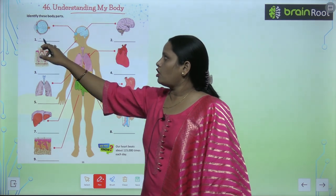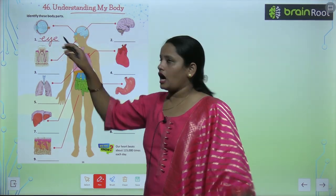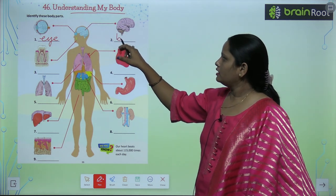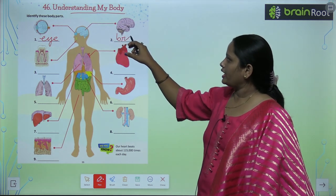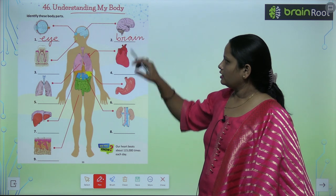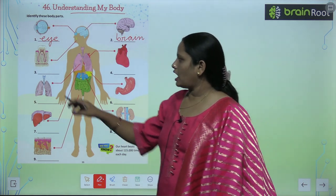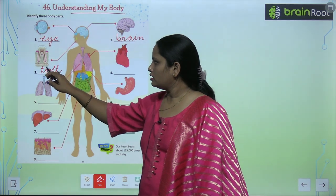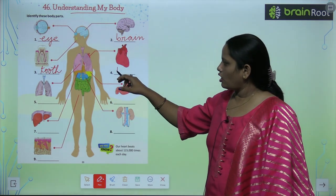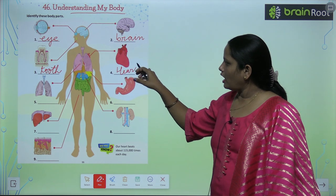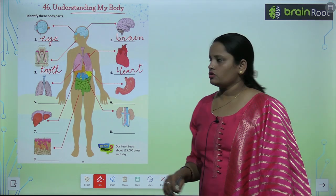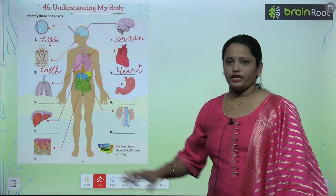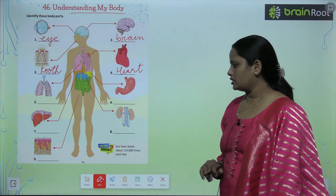This first picture is of an eye. Aakho ke picture haiye. Next, this is a brain. This is a tooth. This is a picture of the heart. Similarly, identify these pictures and write the names here.